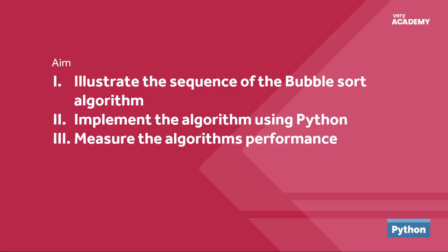In this tutorial there are three phases. First, we illustrate and describe the sequence of the bubble sort algorithm. Then we implement the algorithm using Python. And then from a practical point of view, we measure the runtime of the implementation using the timeit module. Just to confirm, we won't be moving into asymptotic analysis or focusing on big O notation — we're looking at performance from a practical point of view. Maybe that's something for a future tutorial.